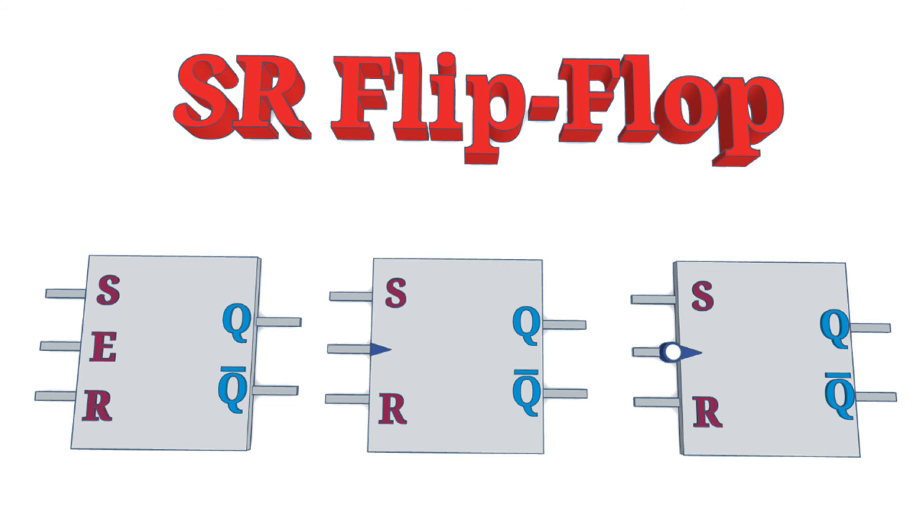The one shown on the left has an extra input marked as E, which refers to enable. The set and reset inputs are only used when the enable is high. The enable pin can be set high permanently, in which case it will operate the same as the basic flip-flop earlier.